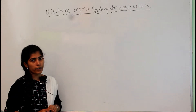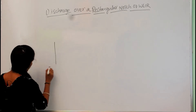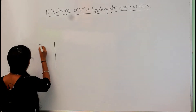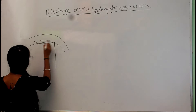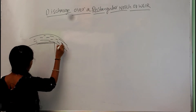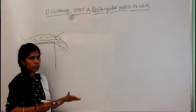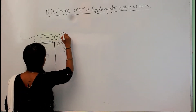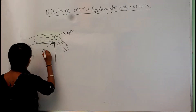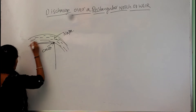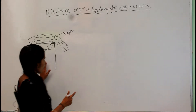Let's start with the first one — the discharge over the rectangular notch or rectangular weir. Let's draw the diagram from the side view. Water flows over the structure. The layer of water passing over the top of the crest is called the nappe, and the top portion is called the crest. This is the liquid surface.